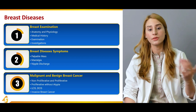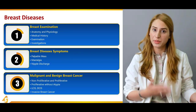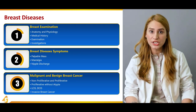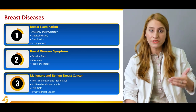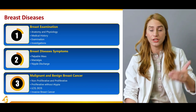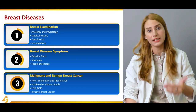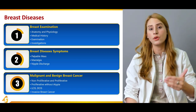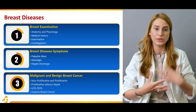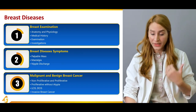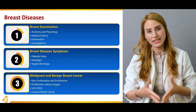In section two, we're going to talk about breast disease symptoms — how the patient is actually presenting to you. There can be a palpable mass, there can be mastalgia, or there can be nipple discharge. A patient may present with all three symptoms or with just one of them. You need to take a detailed history to understand the association and relationship of symptoms, and correlate these with the clinical examination.